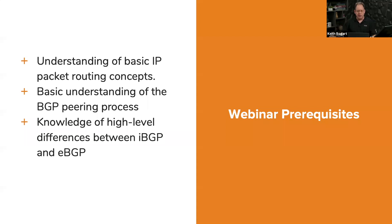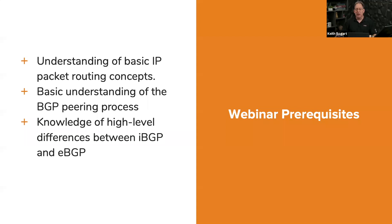In order to understand this, you need a basic understanding of IP packet routing concepts. Also, a basic understanding of the BGP peering process — Britney has included a link to the topology in the chat window so you can follow along with my demonstrations. In my topology, BGP is already set up, routers are already peered with eBGP and iBGP peers already configured, so our focus is on path attributes, not the peering process.